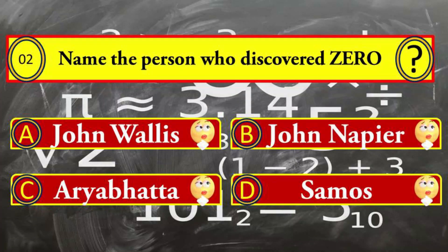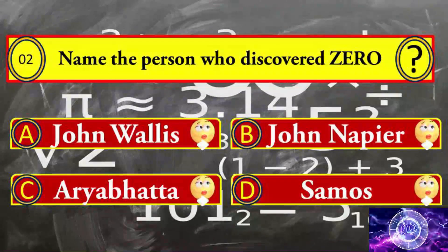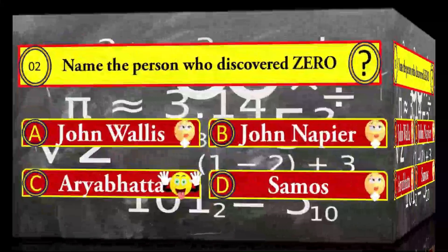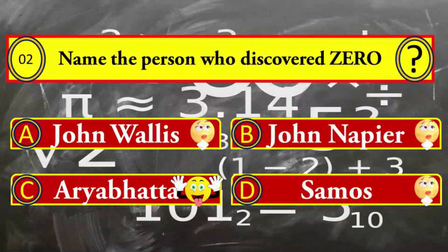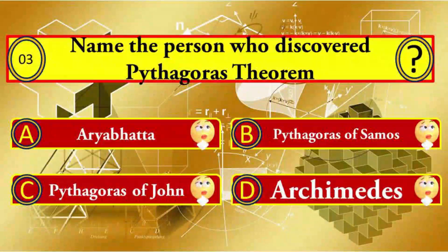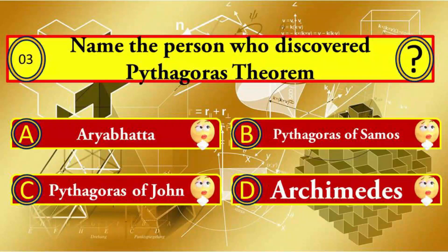Question number two: name the person who discovered zero. Your options: A) John Welles, B) John Napier, C) Aryabhatta, and D) Samos. Aryabhatta is the right answer.